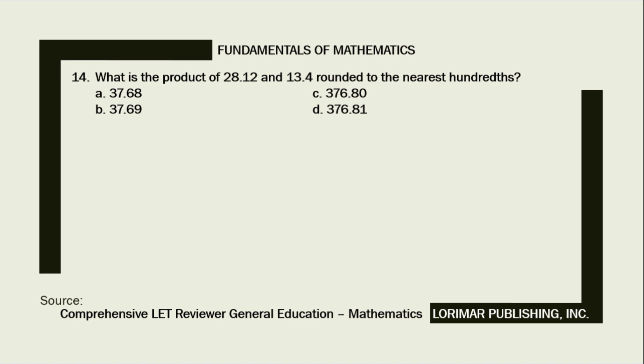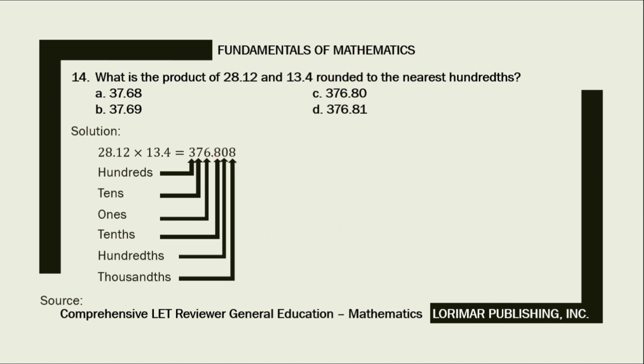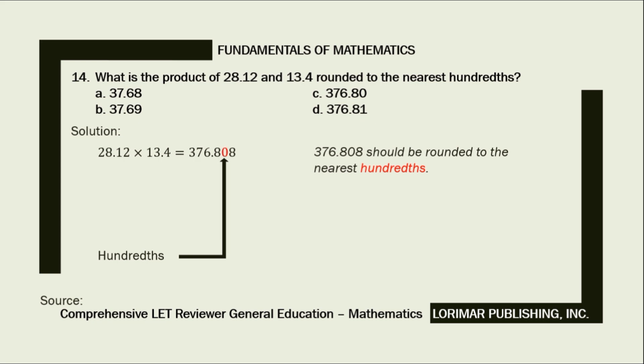Here is our solution. 28.12 times 13.4 equals 376.808. The product has three decimal places: 7 in the tens, 6 in the ones, 8 in the tenths, 0 in the hundredths, and 8 in the thousandths. As asked, our product should be rounded to the nearest hundredths. Since 0 is in the hundredths position followed by 8, 0 becomes 1. So 376.808 becomes 376.81. The correct answer is letter D, 376.81.